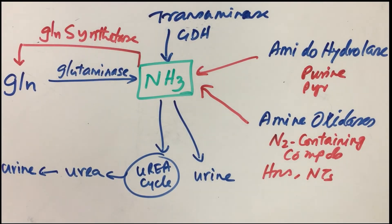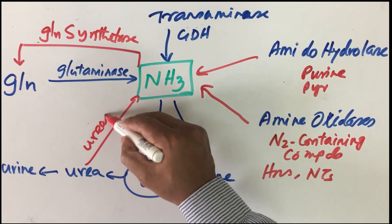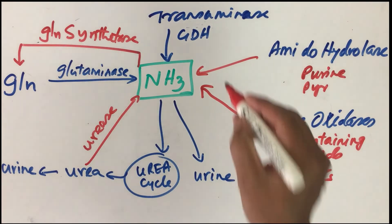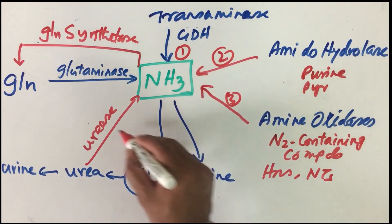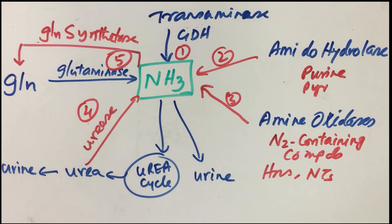There are certain intestinal bacteria that have an enzyme known as urease. These bacteria can act on urea using the urease enzyme, and that also contributes towards the formation of ammonia. So in total, there are five sources of ammonia for the urea cycle. This gives us an overall idea about how ammonia is generated and how it contributes towards the formation of the urea cycle.